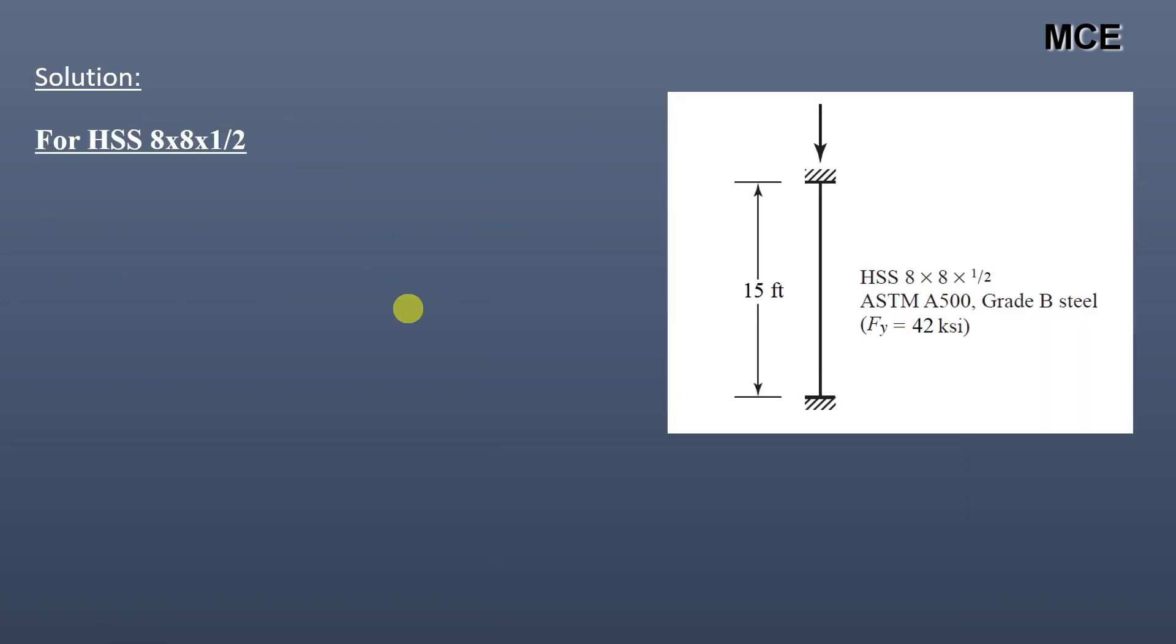First, from AISC steel construction manual, the properties of HSS 8 x 8 x 1/2 are: cross sectional area is equal to 13.5 inch squared and the least radius of gyration is equal to 3.04 inches.